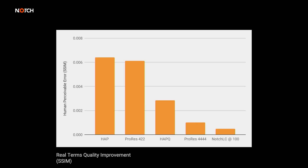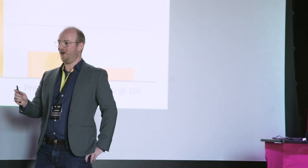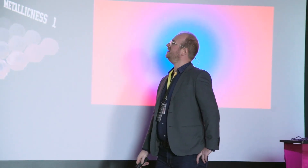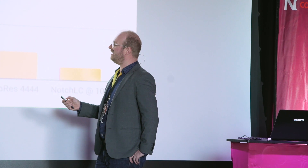When you measure NotchLC in terms of its SSIM error — the lower the number, the lesser the error, and therefore the higher the quality — across the tests shown, you see HAP, ProRes 422, HAP-Q somewhere in the middle, ProRes 4444, and NotchLC at 100. I'm not going to pretend we win every single image quality scenario, but five out of six of those we beat ProRes 4444, and the spaces where we don't are quite minimal.